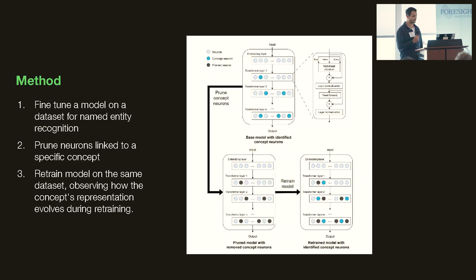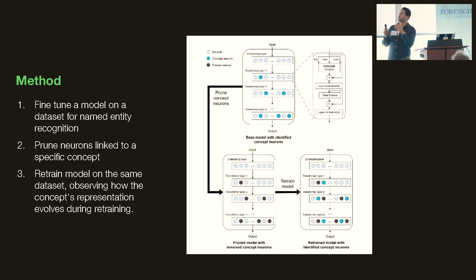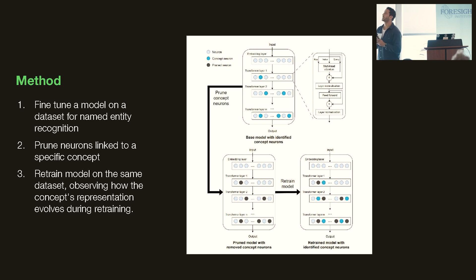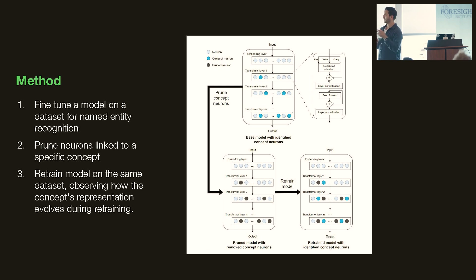Here's another somewhat complicated-looking figure. In essence, what we do is take a base model and fine-tune it for a specific task. We then identify a really strong, salient concept that exists in that model, and we prune this concept. We then retrain it until it achieves some performance on some arbitrary task, and we figure out what happened to the concept we tried to remove.